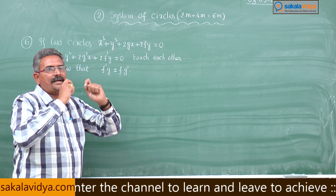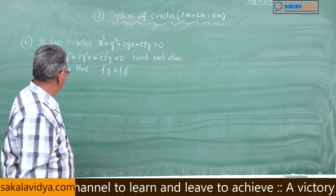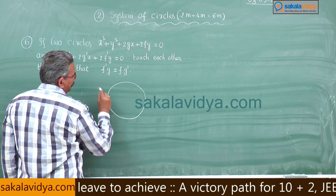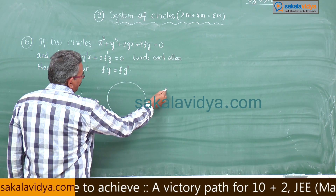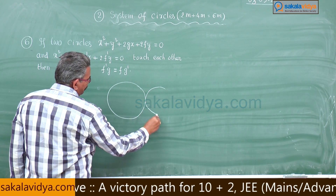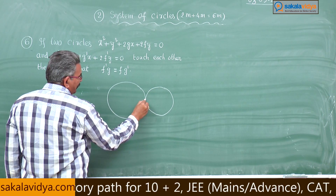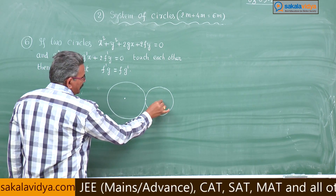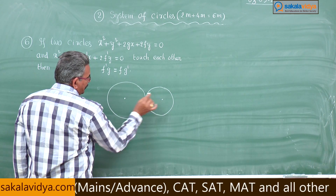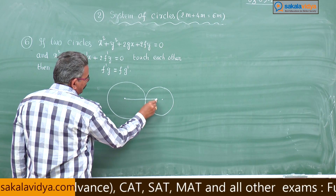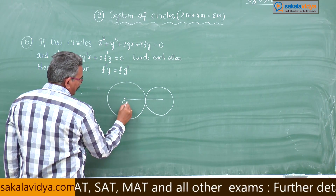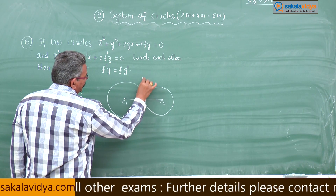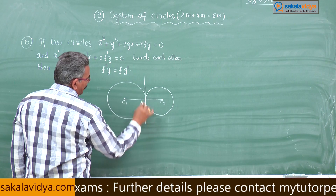The point of contact is the origin. For example, this is one circle, this is another circle touching each other, and this is the origin. This is the center of the first circle, center of the second circle. Joining them — suppose this is C1, this is C2, this is the point of contact P, and this will be the common tangent.